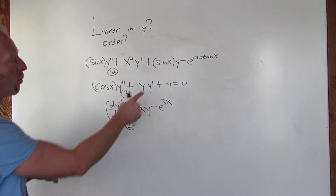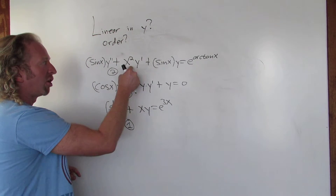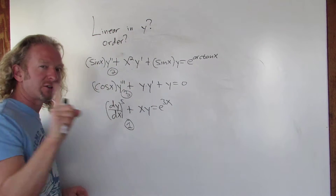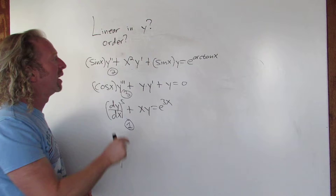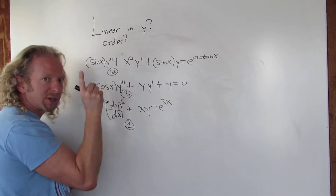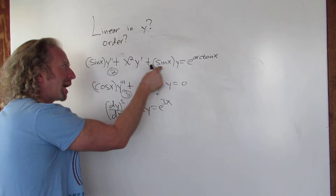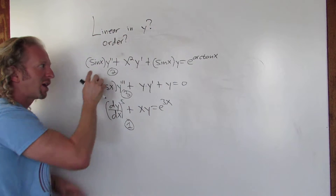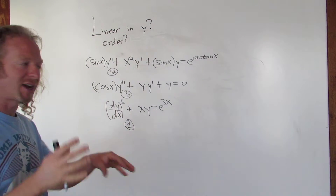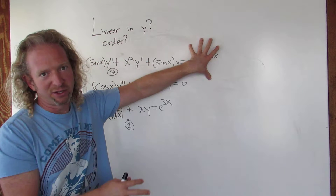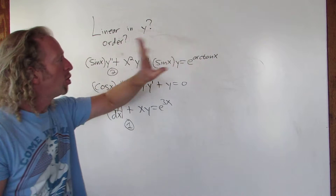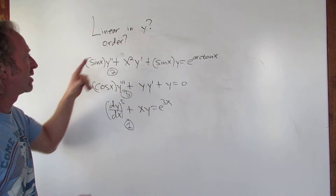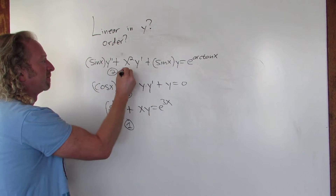So here, y and all of its derivatives are to the 1st power, and in front of y and all of its derivatives you have pure functions of x — and you should have a pure function of x on the right side too. So this would be linear.